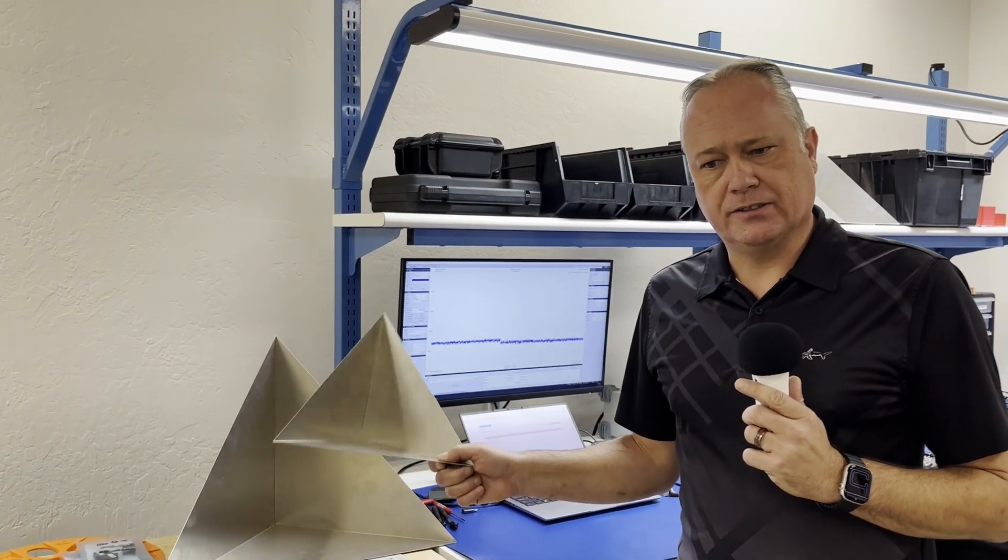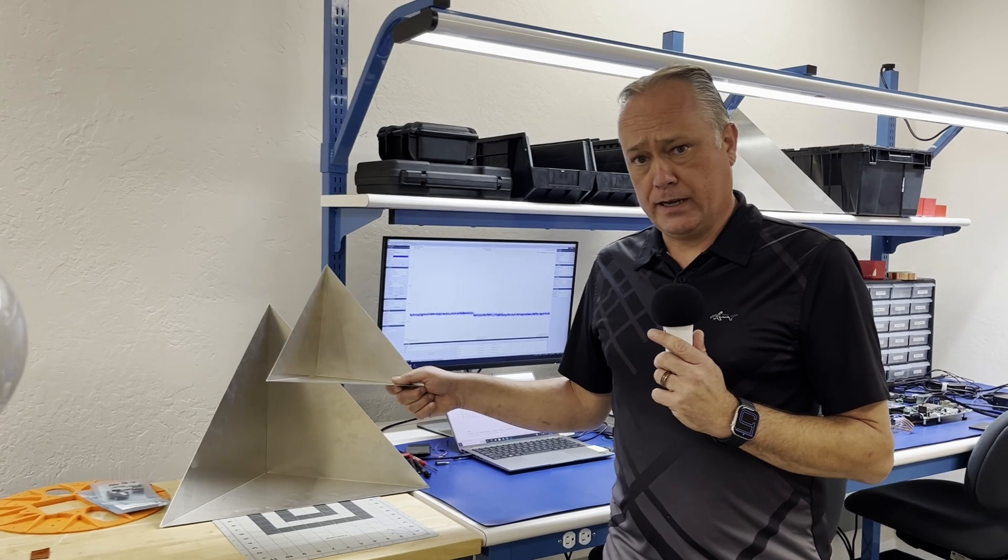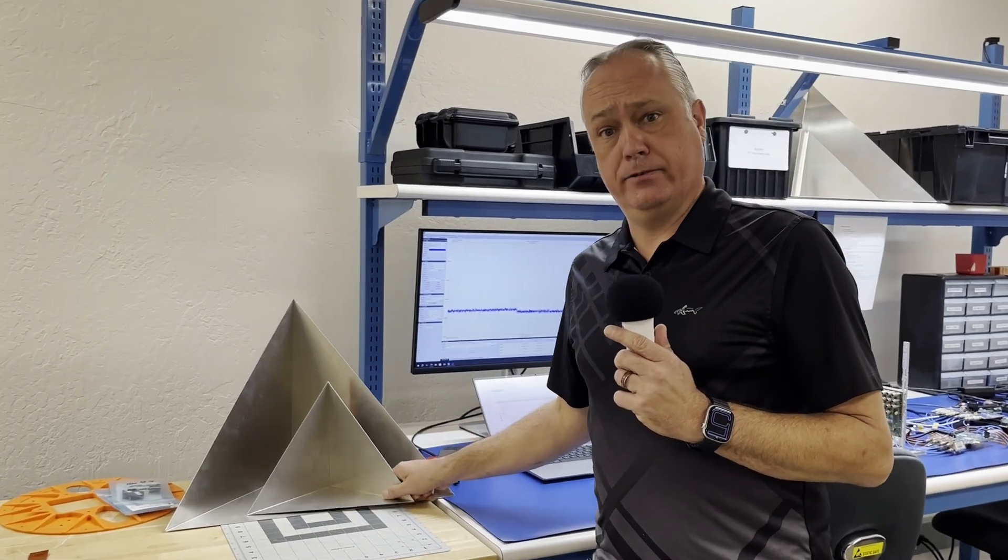Over here, you see our corner reflectors. This corner reflector is used for testing the radar. And the bigger the corner reflector, the more energy gets reflected back to the radar.